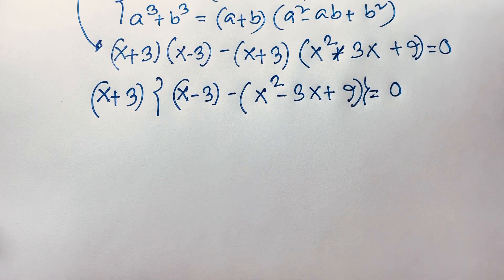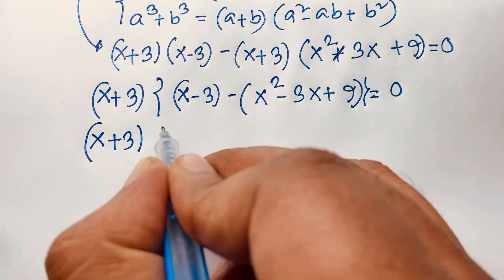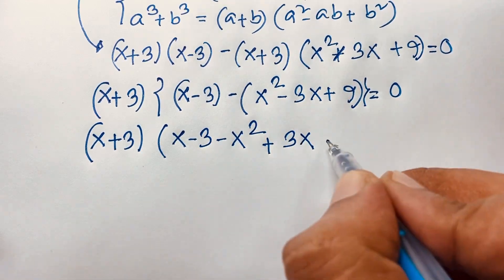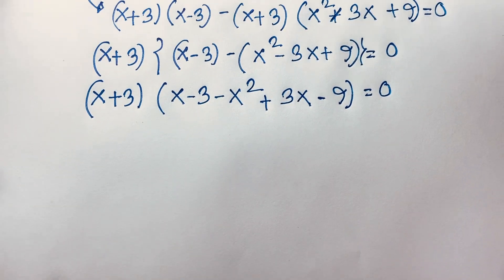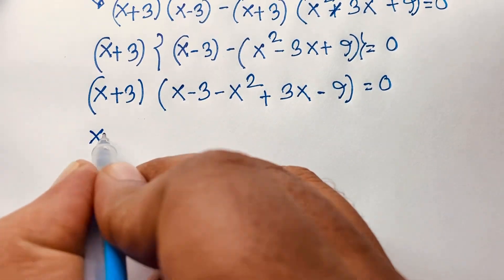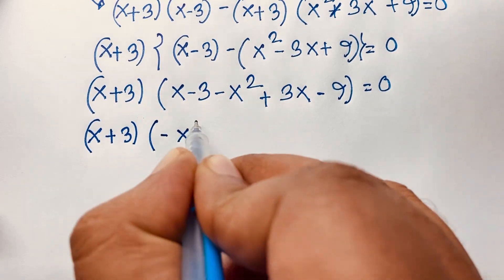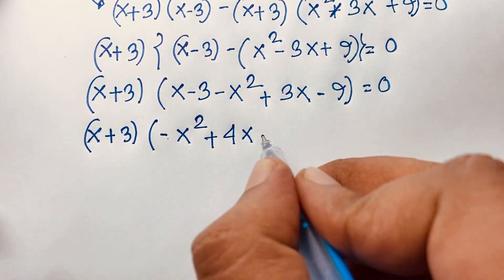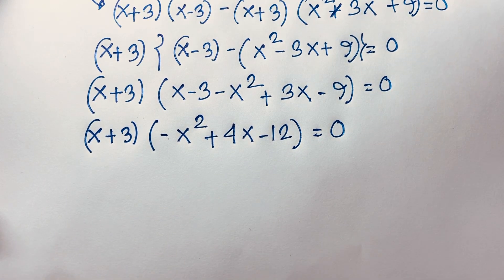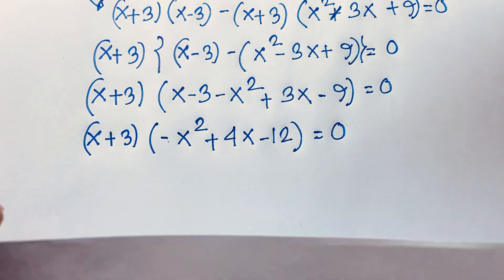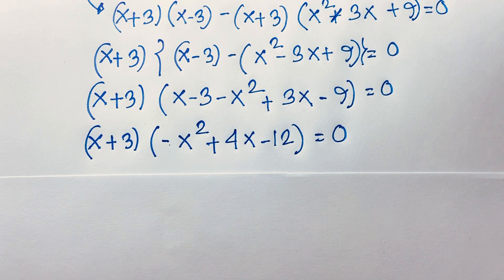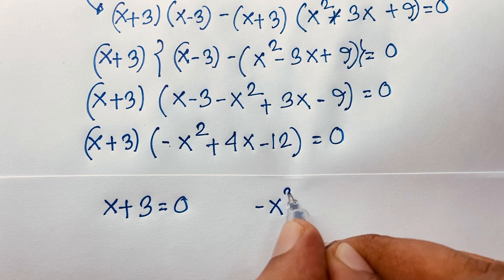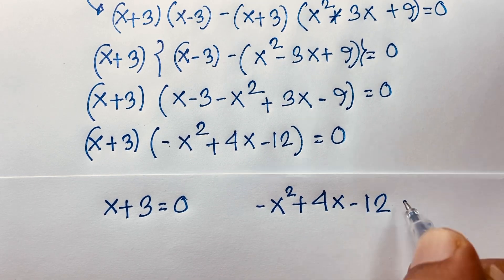Expanding inside the bracket: (x+3) times [x−3 − x²+3x−9] equals 0, which simplifies to (x+3) times [−x²+4x−12] equals 0. Multiplying by negative 1 gives us the quadratic equation x² minus 4x plus 12 equals 0.